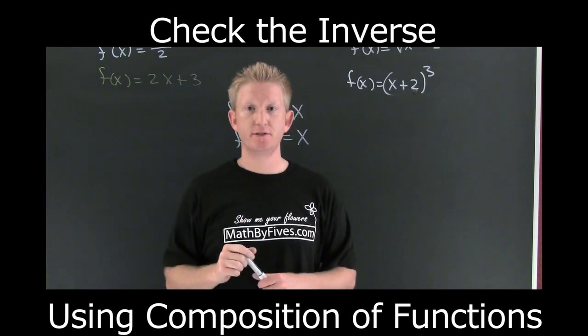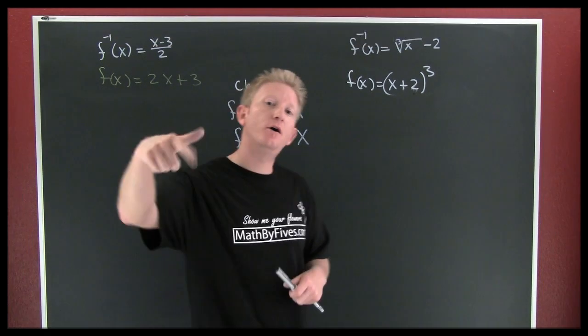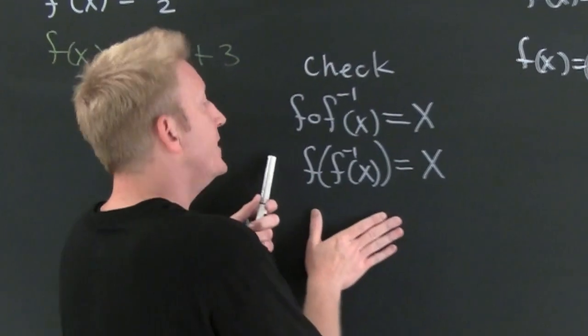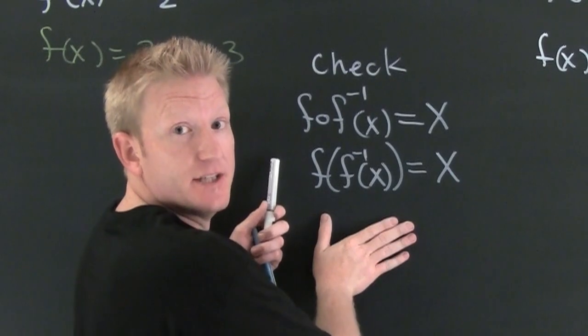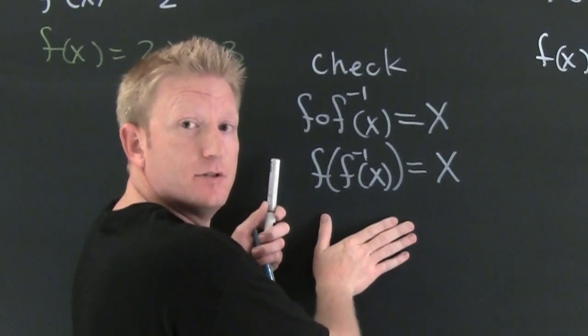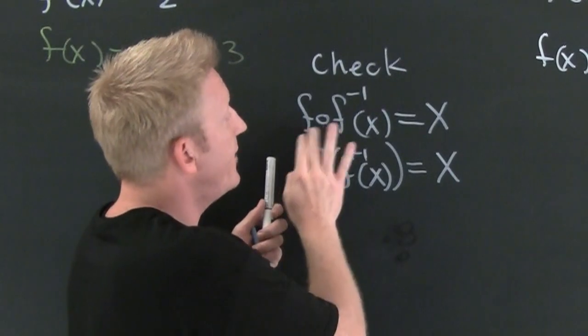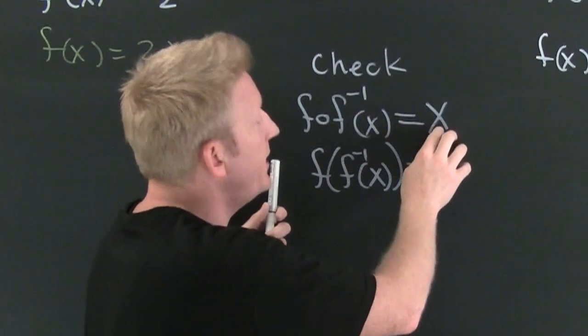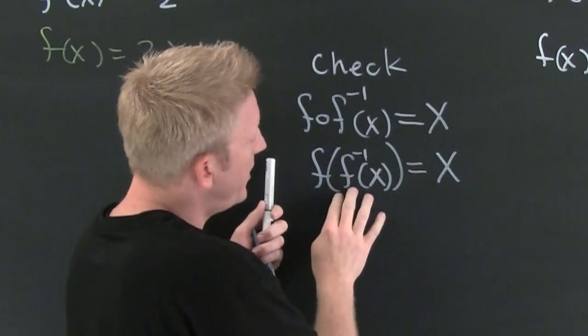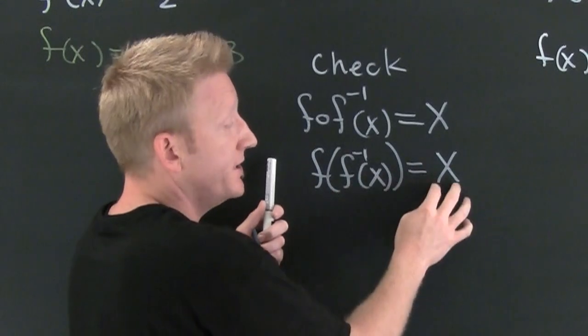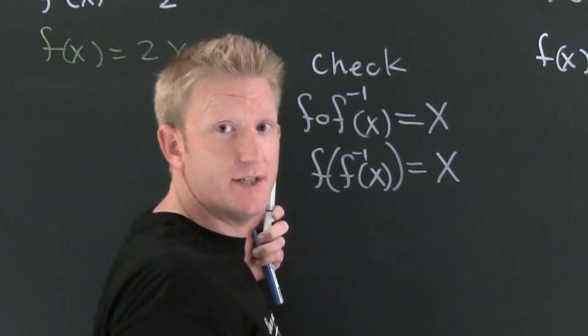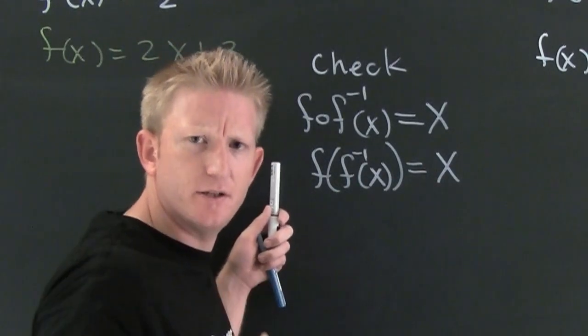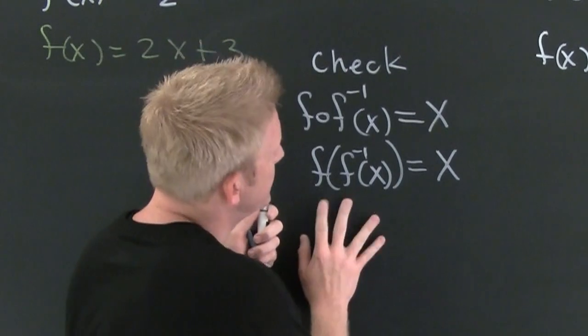Well, there's a property of inverses. And this is the property. To check it, you're going to check the composition of the two, the inverse and the function. F of f inverse is the argument if it's the inverse. F of f inverse is the argument composition. If you want to check out composition, look at the composition video.